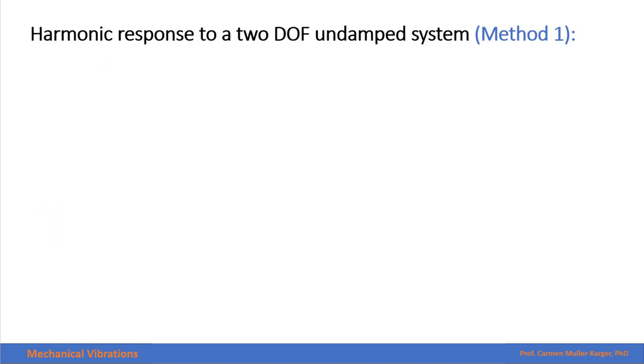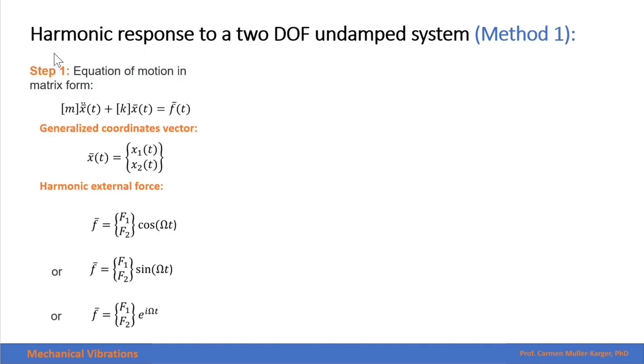Let's find then the response for harmonic forces for an undamped system using the first method, which is with the generalized coordinates. Step one is always finding the equation of motion. For an undamped system, the equation of motion has this form. The generalized coordinate vector has this form, and the harmonic external force is either any of these three forces.